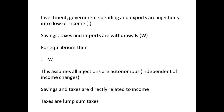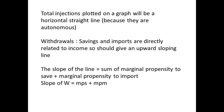The assumptions here are that all injections are autonomous. So if we graph these, injections should be a horizontal straight line if they are independent of income. Withdrawals such as savings and imports are dependent on income, and so we expect an upward sloping line — the more income, the greater the savings and the greater the imports. The slope of the withdrawals line would be the sum of the marginal propensity to save (MPS) and the marginal propensity to import (MPM), so the slope of W equals MPS plus MPM.